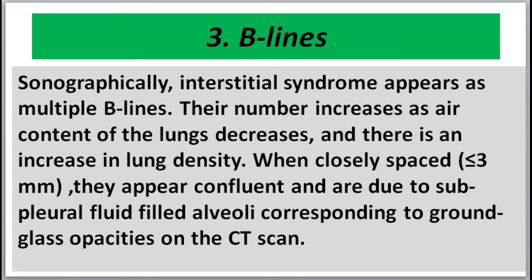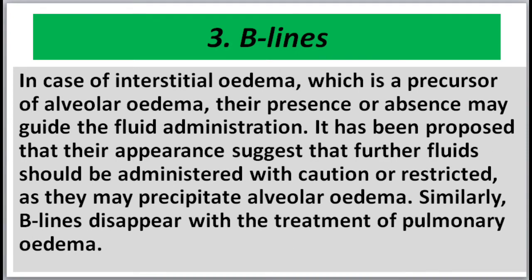Sonographically, interstitial syndrome appears as multiple B lines. Their number increases as air content of the lung decreases and lung density increases. When closely spaced — less than three millimeters — they appear confluent and are due to sub-pleural fluid-filled alveoli, corresponding to ground-glass opacities on CT scan, in cases of interstitial edema, which is a precursor of alveolar edema.